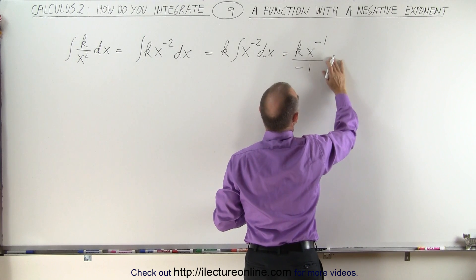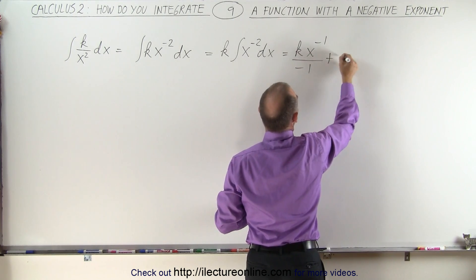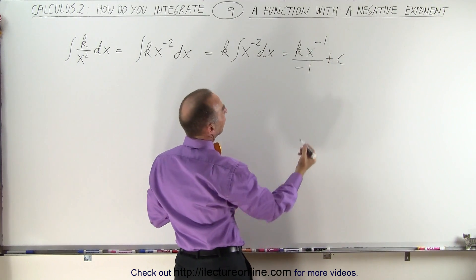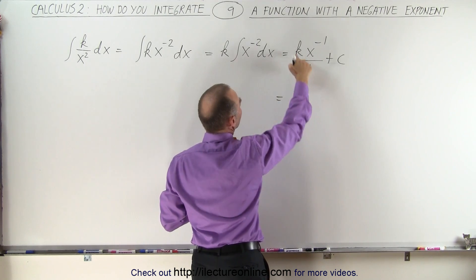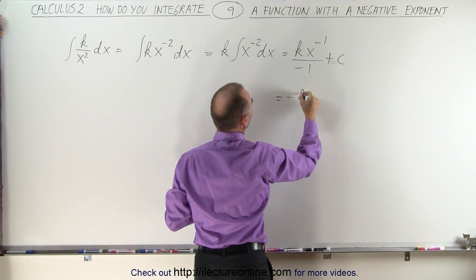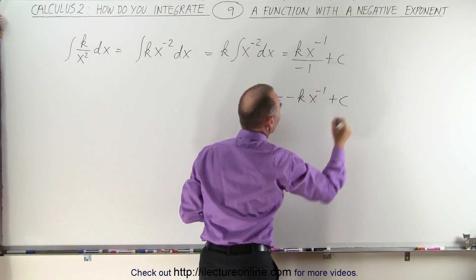So this becomes, oh, we probably want to mention that there's a constant of integration. And then we apply the negative to the k. So we can write minus k times x to the minus 1 plus constant of integration.